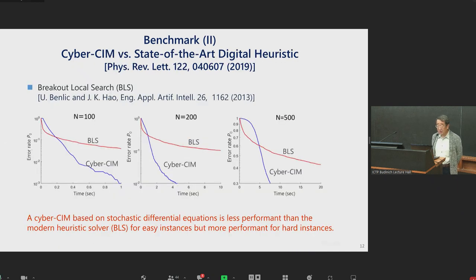Second benchmark result actually describes the performance of cyber CIM on CPU versus state-of-the-art digital heuristic. In this case, breakout local search, one of the best heuristics, which constantly features the best solution for max cut. Three panels for program size n equal 100, 200, 500 spins actually demonstrate the general trend. Cyber CIM is less performant than BLS when the given program instances are easy. But if the program instances are hard, then the cyber CIM is more performant. Namely, with appropriate computation time, it can always report and return the correct optimum solutions, while BLS does not.